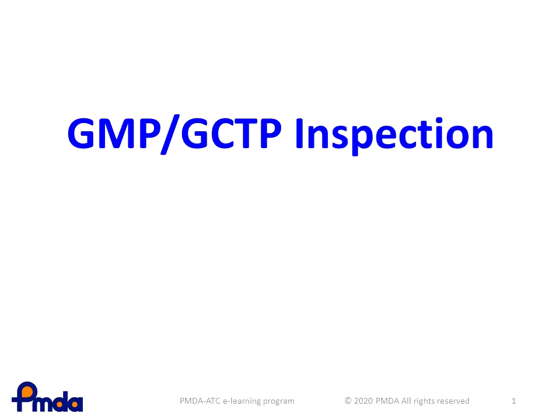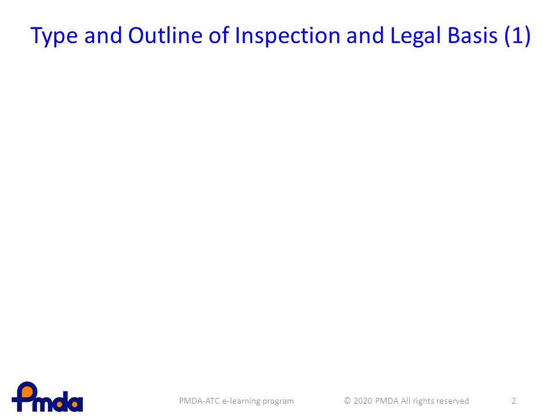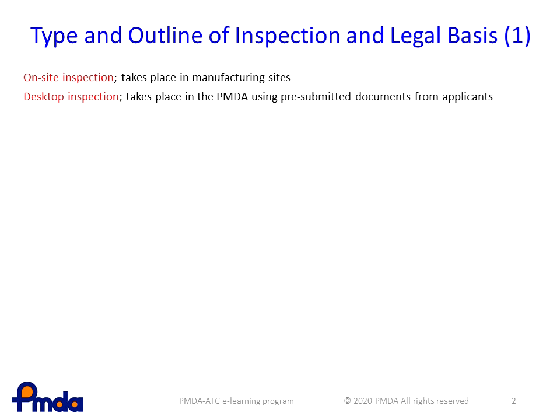In this lesson, you will learn about GMP-GCTP Inspection. GMP-GCTP Inspection is an inspection process that confirms whether a manufacturing site of drugs, quasi-drugs, and regenerative medical products manufactures such products under appropriate control. There are two methods of inspection: on-site inspection that takes place at the manufacturing sites, and desktop inspection that takes place at PMDA using pre-submitted documents from applicants.